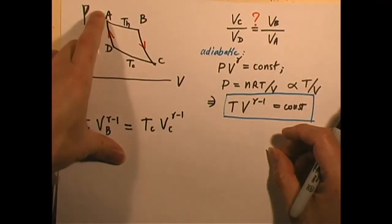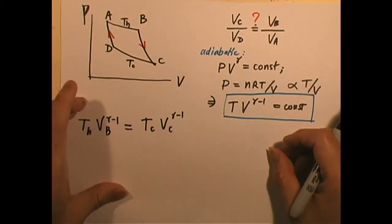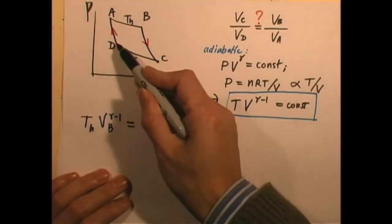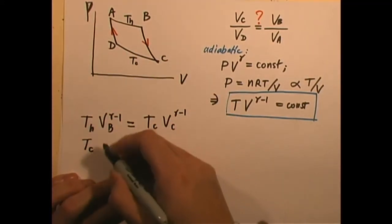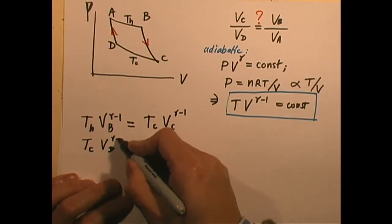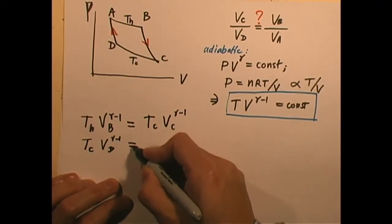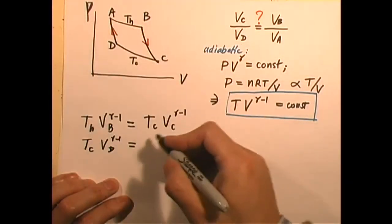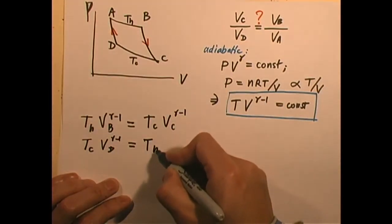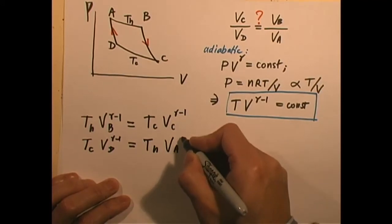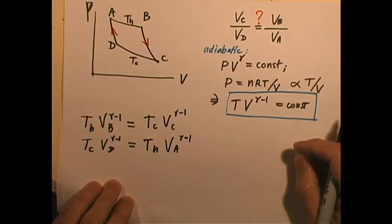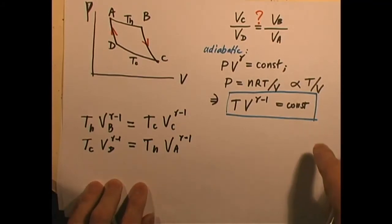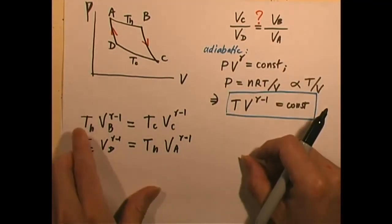Similarly, from D to A, let us take this equation to relate points D and A. So I have Td, Td is just Tc, Vd to the power of gamma minus one. That's got to be equal to Ta, Th, Va gamma minus one. What do we do now? We want to relate it for this quantity, Va, Vb, Vc, Vd. And you have Th, Tc.